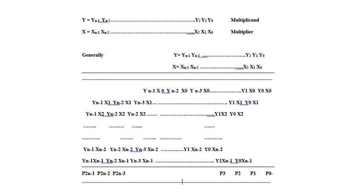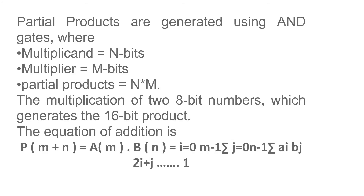This shows the multiplier and multiplicand of the Brown multiplier for the 4 by 4 multiplication, along with the 4 by 4 multiplication matrix table. Partial products are generated using AND gates, where the multiplicand equals n bits, the multiplier equals m bits, and the number of partial products equals n cross m. The multiplication of two 8-bit numbers generates a 16-bit product.